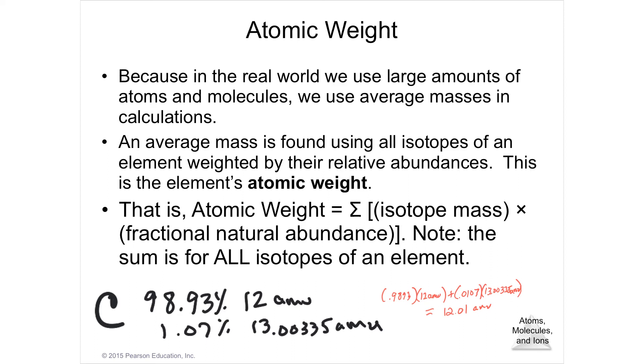All of the different isotopes times the decimal percentage of how abundant they are will give you the number that you find under the periodic table.